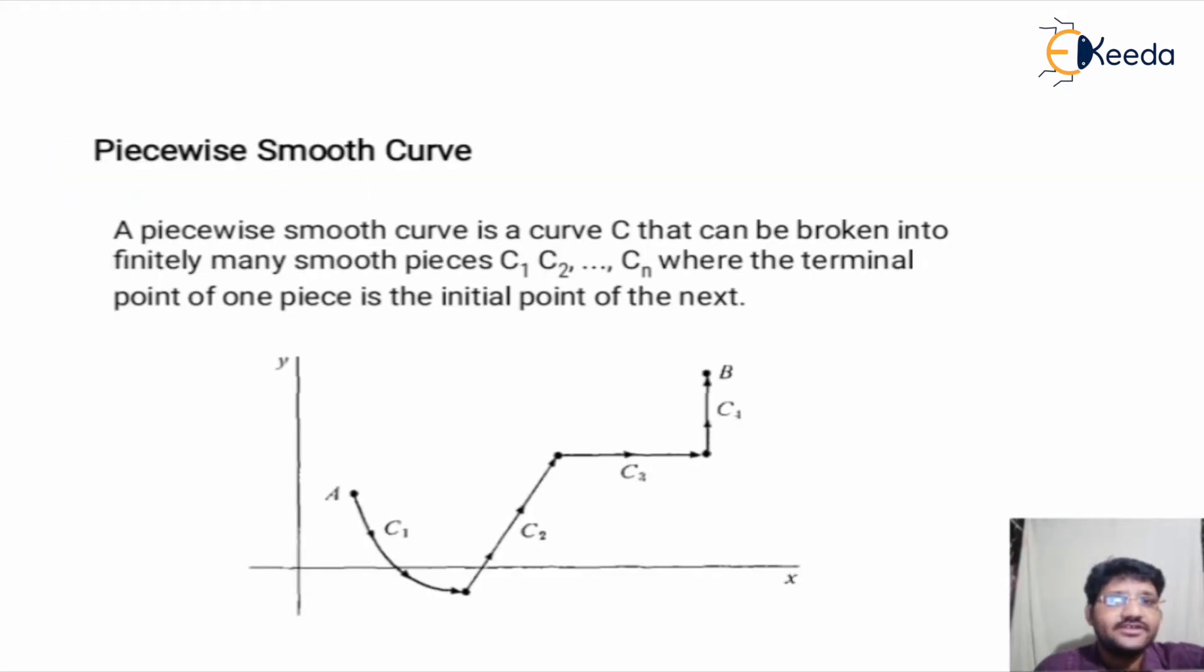Now, piecewise smooth curve. A piecewise smooth curve is a curve C that can be broken or divided into finitely many smooth pieces like C1, C2, C3 up to Cn, where the terminal point of one piece is the initial point of the next.